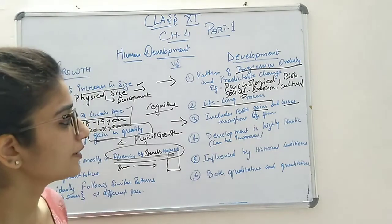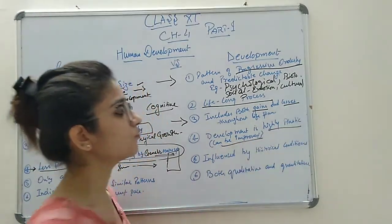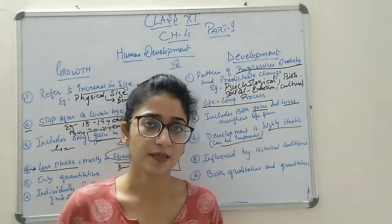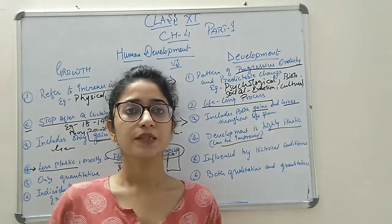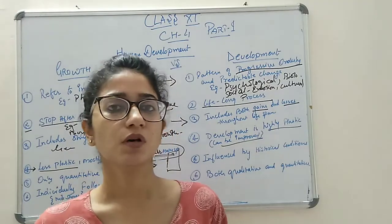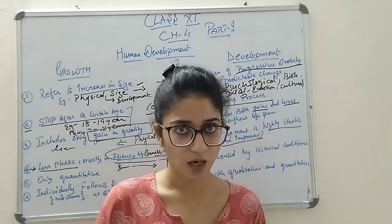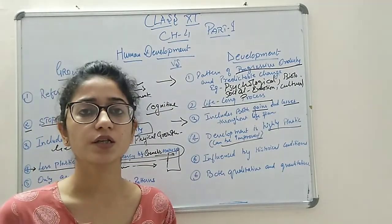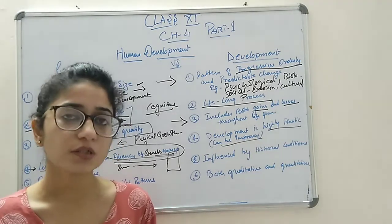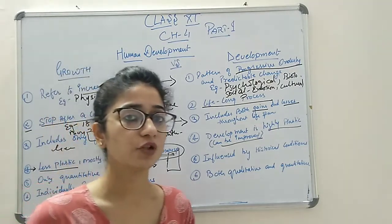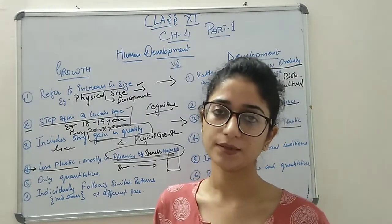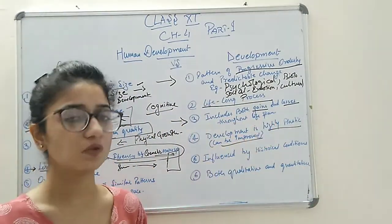On the other hand, development is highly plastic — meaning it can be improved. For example, we get through some losses in life. There we learn a lesson and we improve ourselves. You are studying, but due to some reason you cannot cope with your syllabus and you do not get good marks. That becomes a lesson for you, because that loss creates positive motivation to work hard next time. That improvement is required in development — some kind of improvement definitely comes whether it is a gain or a loss.